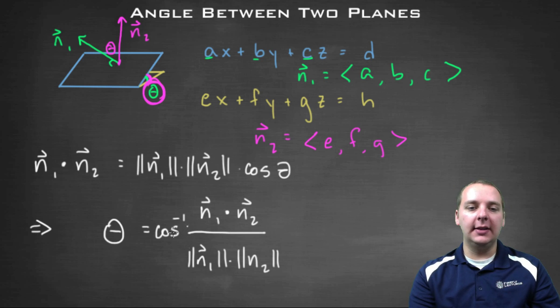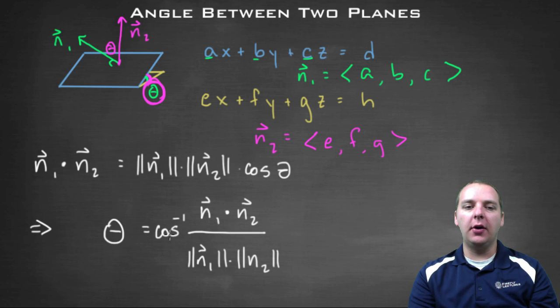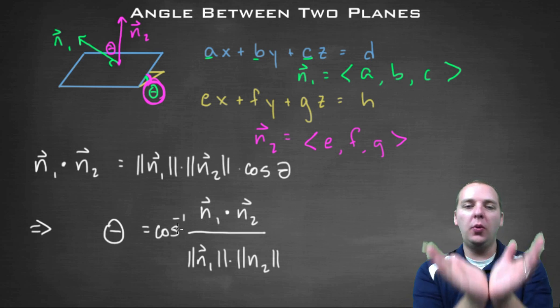Now that's almost it. This is pretty much all you need with one subtle, subtle difference. For this guy here, for this equation here, you'll remember that the range of the arc cosine function, the values that could come out of arc cosine, are from zero to 180.